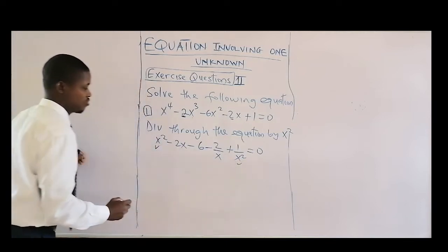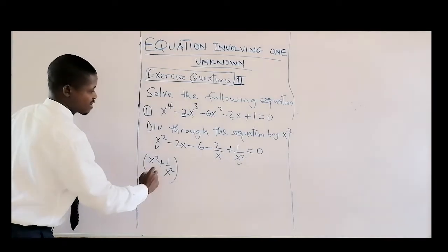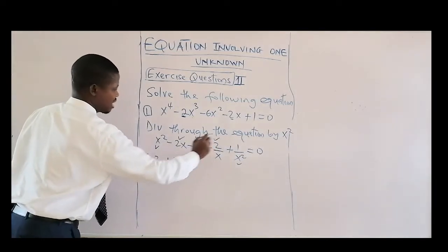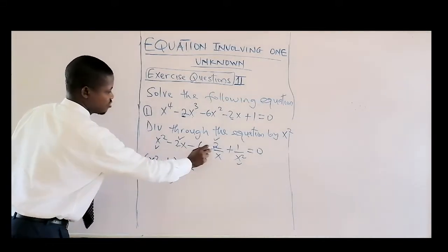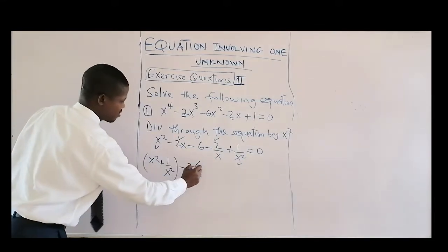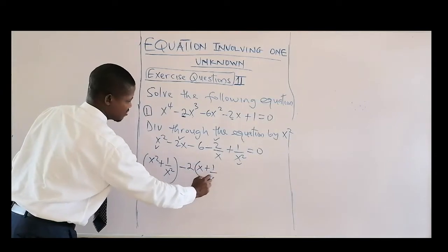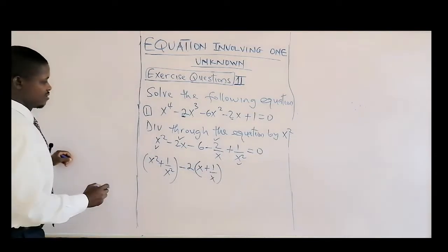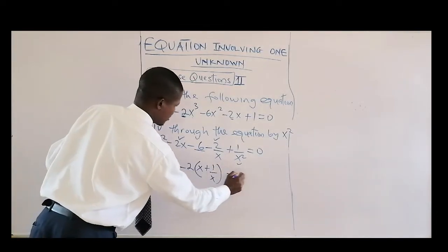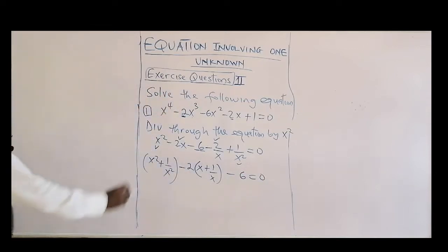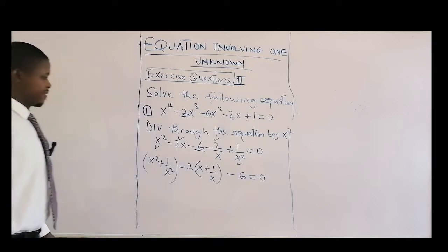We can combine these terms together: we group x squared plus one over x squared, and we also take minus two outside the bracket, giving x minus one over x. Then we have minus six equal to zero. Please track the coefficients carefully — that will tell you what to do.